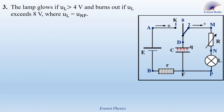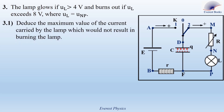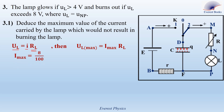Part 3: The lamp glows if UL is greater than 4 volts and burns out if UL exceeds 8 volts. Question 3.1: Deduce the maximum value of the current carried by the lamp which would not result in burning the lamp. UL equals I times RL, and since RL is constant, if UL is maximum then I is maximum. UL max equals 8 volts divided by RL equals 100 ohms, giving I max equals 0.08 amperes.